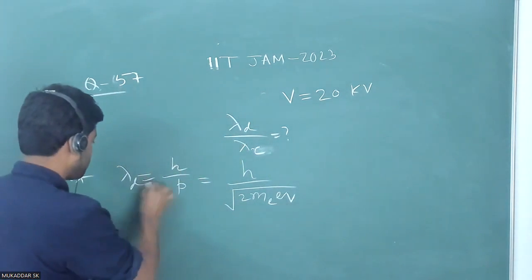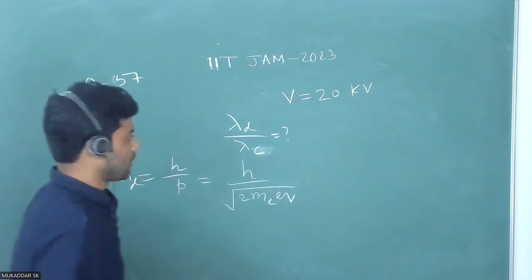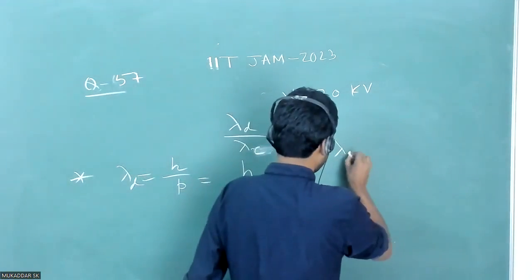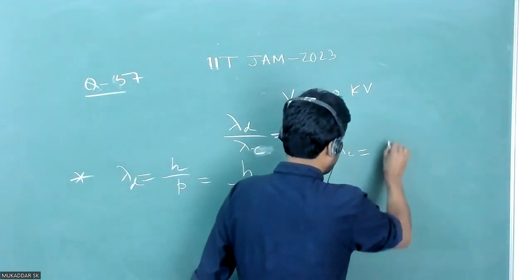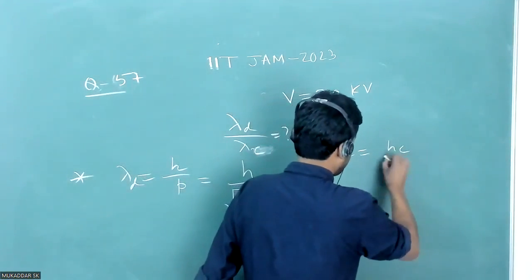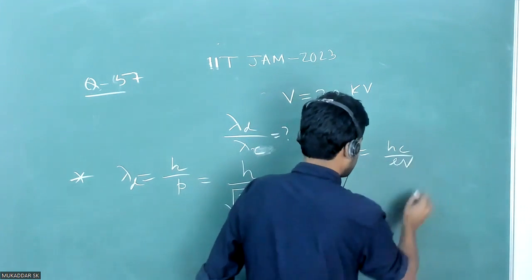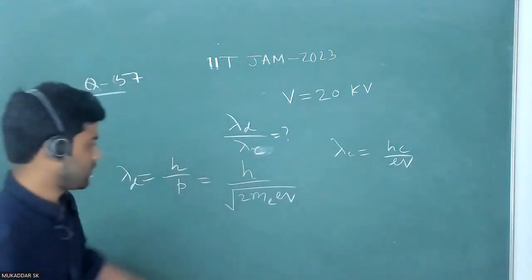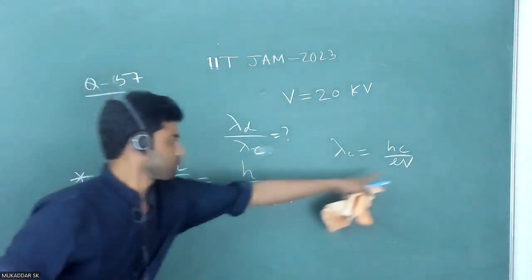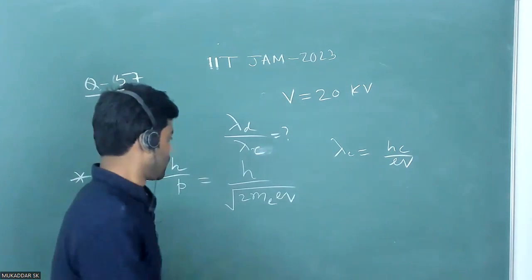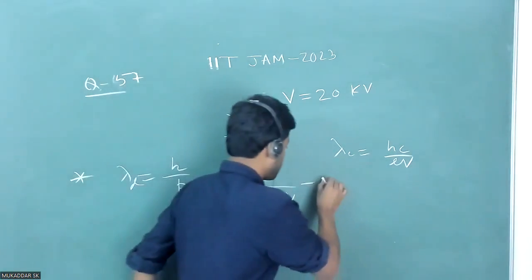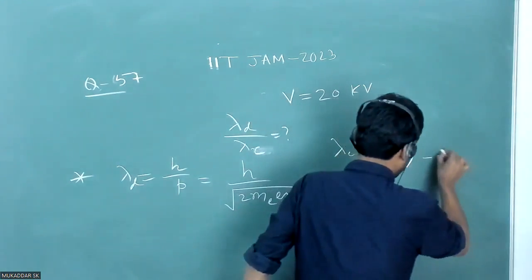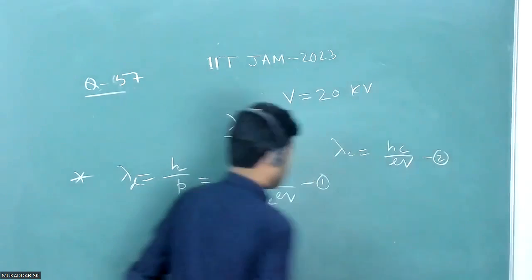The minimum wavelength of X-ray is given by λ_min = hc / (eV), where V is the applied potential difference. This is equation number two.